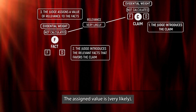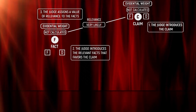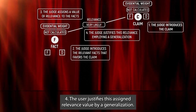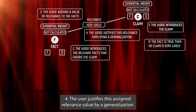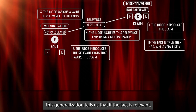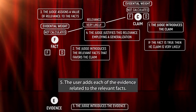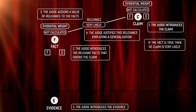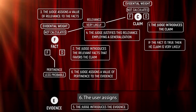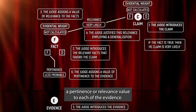The assigned value is very likely. Four, the user justifies this assigned relevance value by a generalization. This generalization tells us that if the fact is relevant, then it makes the claim more or less probable. Five, the user adds each of the evidence related to the relevant facts. Six, the user assigns a pertinence or relevance value to each of the evidence.